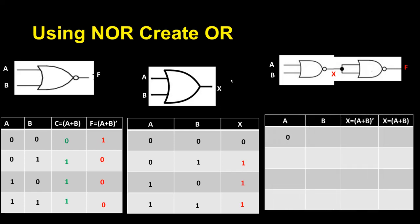I have input combinations A and B with all possible combinations. I get the NOR gate output as X, and after that I get the opposite value.